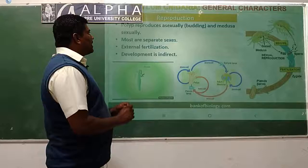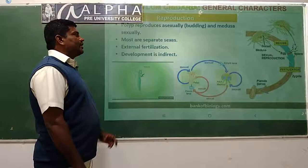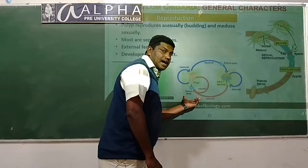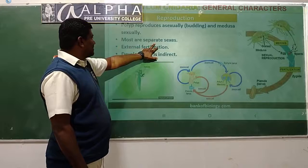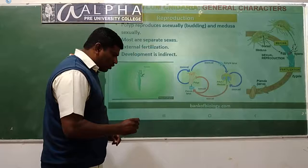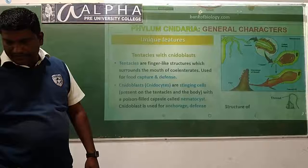Reproduction in Cnidaria: we see asexual reproduction by budding - for example, Hydra reproduces asexually by budding. Polyps reproduce asexually and medusae reproduce sexually. Most have separate sexes, external fertilization - that means fusion of both male and female gametes takes place in a liquid media. The development is indirect, meaning it consists of a larval stage.